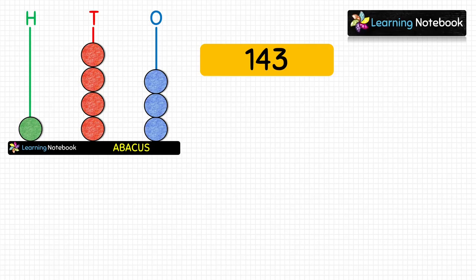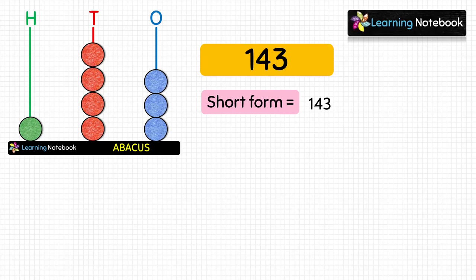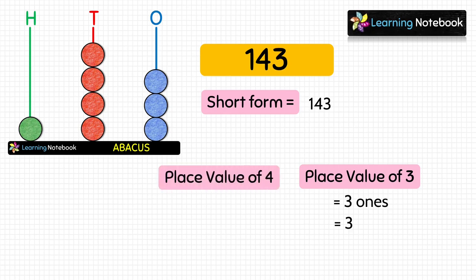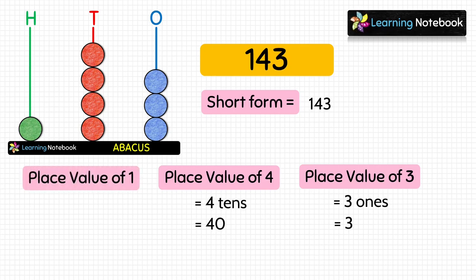143 is also called the short form. Now let's find the place value of each digit. Starting from ones place: we placed three coins, so the place value of 3 is three ones, or 3. We placed four coins at tens place, so the place value of 4 is four tens, or 40. We placed one coin at hundreds place, so the place value of 1 is one hundred, or 100.